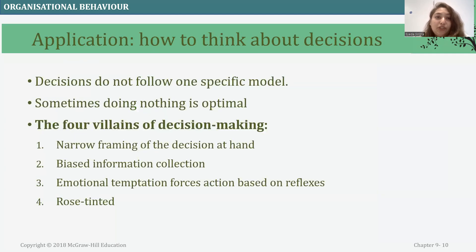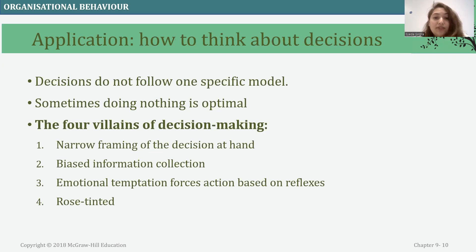Looking at the application of how to think about decisions: decisions do not follow one specific method, so what worked for one problem might not be efficient in solving another. Sometimes doing nothing is optimal. There are four traps of decision making that give us a hard time: narrow framing of the decision at hand, bias in the information collected, emotional temptation focusing on action based on reflexes, and a rose-tinted perspective.